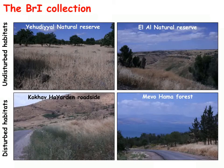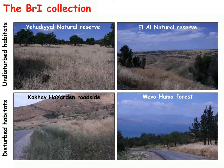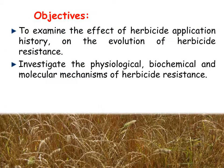In our group we developed a new collection of Brachypodium accessions from more than 100 different habitats in Israel. This ongoing effort currently contains more than 1,000 accessions. The BRI collection includes accessions collected from undisturbed habitats such as nature reserves, and from habitats with known history of herbicide application such as roadsides and planted forests.